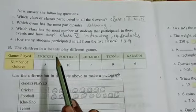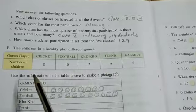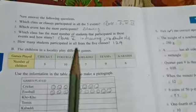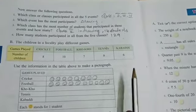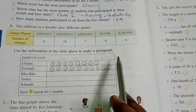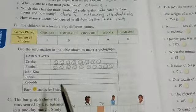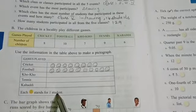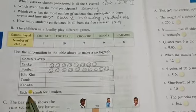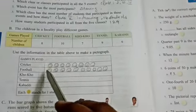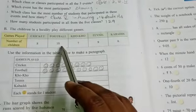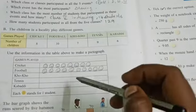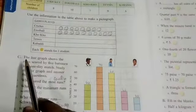The children in your locality play different games: cricket, football, kho-kho, tennis, kabaddi. Number of children: 8, 10, 7, 9, 8. Use the information in the table above to make a pictograph. Cricket, football, kho-kho, tennis, kabaddi - everything is given. Each smiley stands for one student. So one student stands for one smiley. That means totally eight students in cricket means eight smileys will be drawn. In football you have 10 students, so 10 smileys you will draw. The remaining kho-kho, tennis, kabaddi you will do in your book.